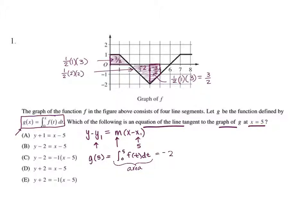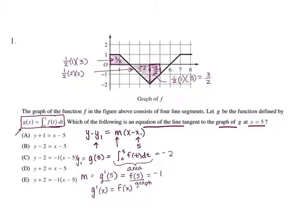Now we need m. Since g is defined as an accumulation function, g prime at x equals f at x. So g prime at 5 equals f at 5, which from the graph is negative 1. Now we have all the pieces: y minus negative 2, which is y plus 2, equals negative 1 times x minus 5. Looking at our answer choices, that gives us answer choice E.